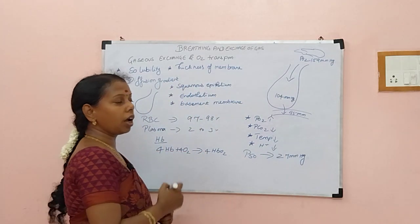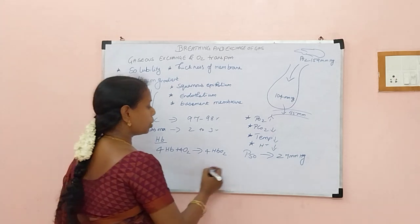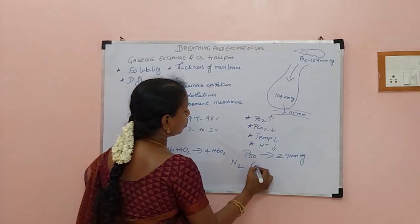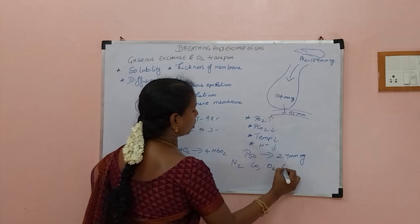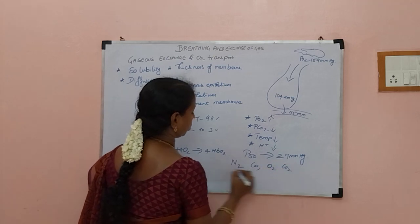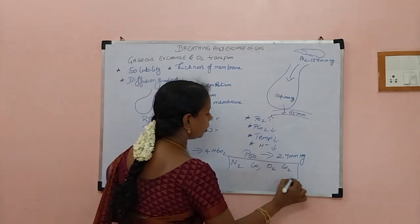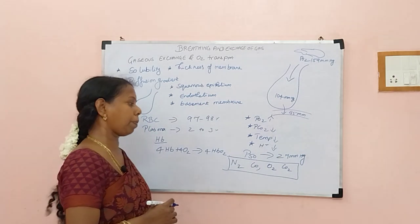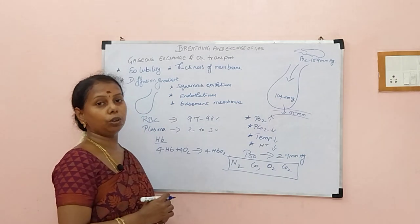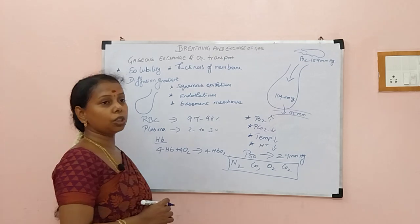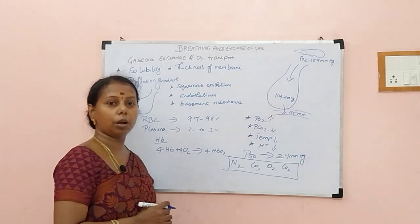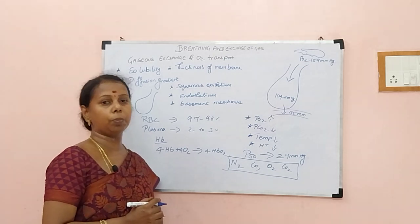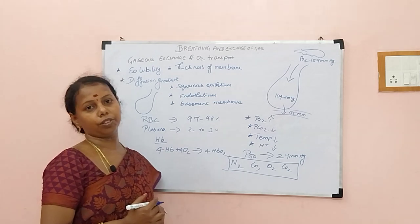Now a question for you, children: consider these gases — nitrogen, carbon monoxide, oxygen, and carbon dioxide. Can you arrange these gases based on diffusion capacity from higher to lower? Please post your answers in the comment box. Thank you all for watching; please subscribe and share with your friends.